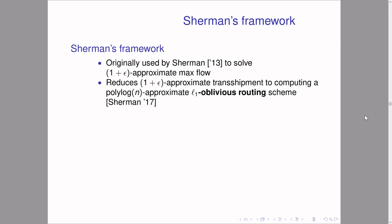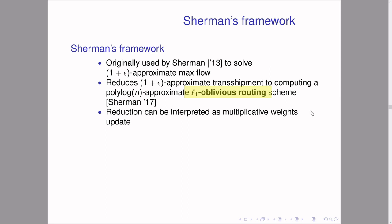We do something very similar, also done in Sherman 2017: we reduce (1+epsilon)-approximate transshipment — the L1 version of max flow — to what is called L1 oblivious routing, which is the L1 version of traditional oblivious routing. Here again the demands are unknown, and we must construct a flow fulfilling those demands; the cost is not max congestion but the L1 cost — the total length of the flows. This reduction can be interpreted using a multiplicative weights update approach.